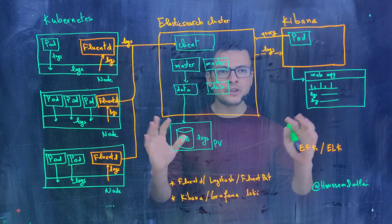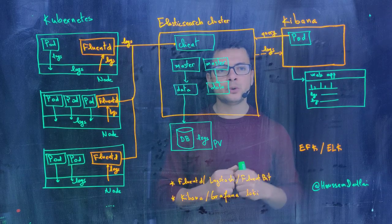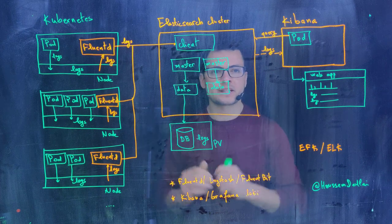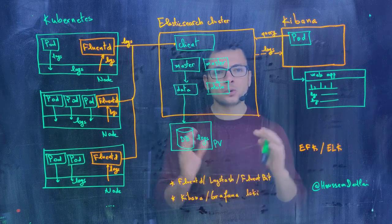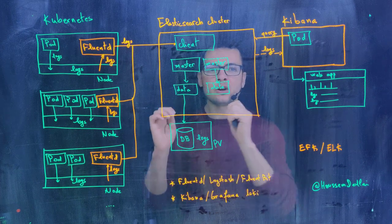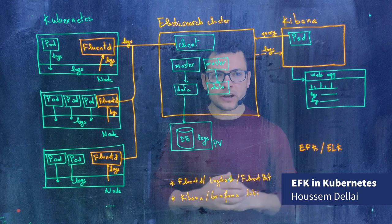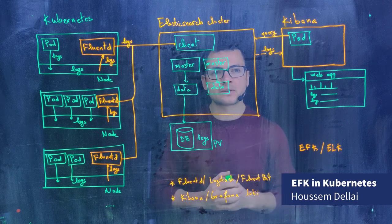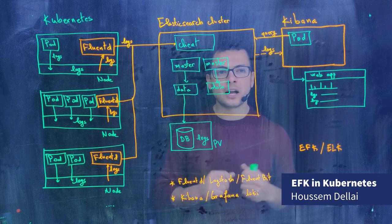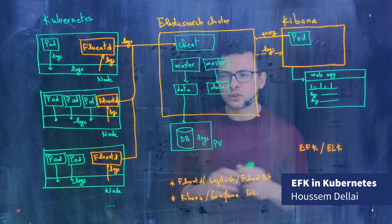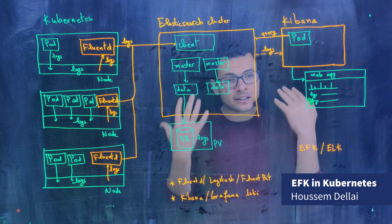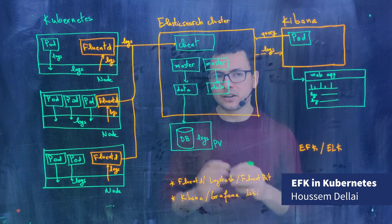In this video we'll learn how to use the EFK suite in a Kubernetes cluster in order to read application logs. EFK stands for Elasticsearch, Fluentd, and Kibana — the three components that need to be installed inside the cluster to read the application logs.